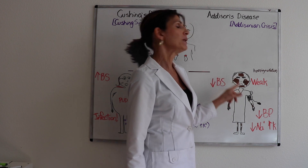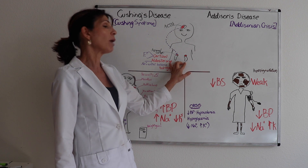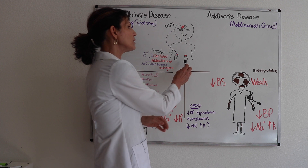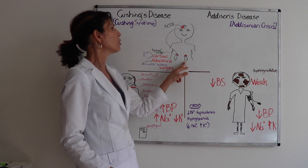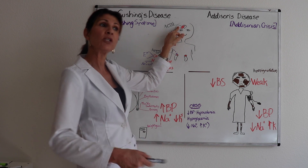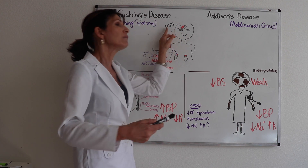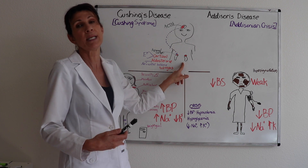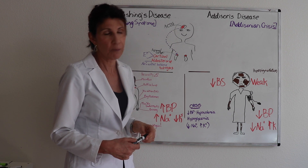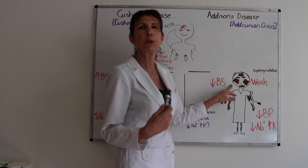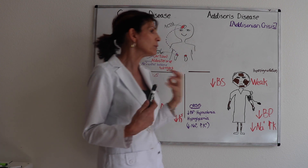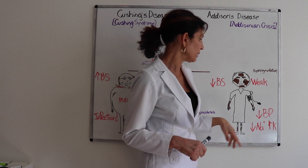Patients with primary Addison's — where the problem is in the organ itself — can present with hyperpigmentation. When cortisol and aldosterone are depleted, the negative feedback loop causes the anterior pituitary to elevate ACTH trying to stimulate the insufficient gland. A precursor to ACTH is melanocyte-stimulating hormone, so elevated ACTH production also increases melanin, resulting in hyperpigmentation of the skin.